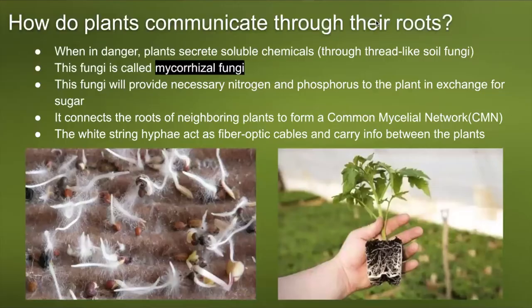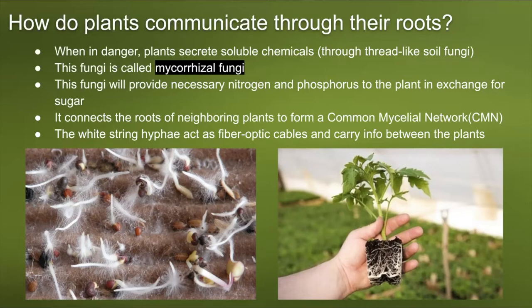When in danger, plants will secrete soluble chemicals through thread-like soil fungi called mycorrhizal fungi. This fungi provides necessary nitrogen and phosphorus to the plant in exchange for sugar — a mutual relationship. It connects the roots of neighboring plants to form a common mycelial network, also known as CMN. The white string hyphae act as fiber optic cables and carry information between the plants. In the pictures shown, you can see the white stringy hyphae all around the roots.